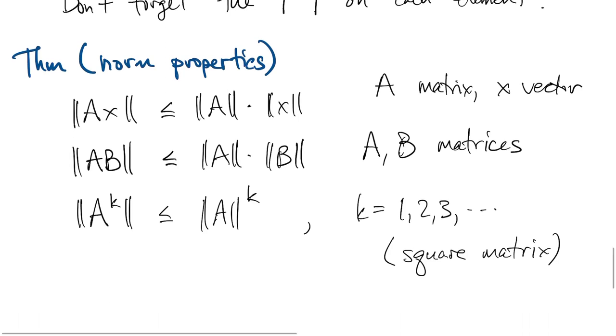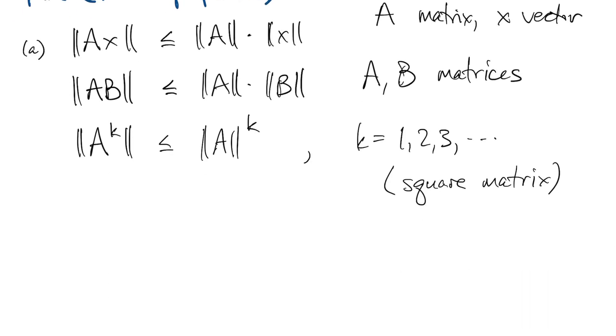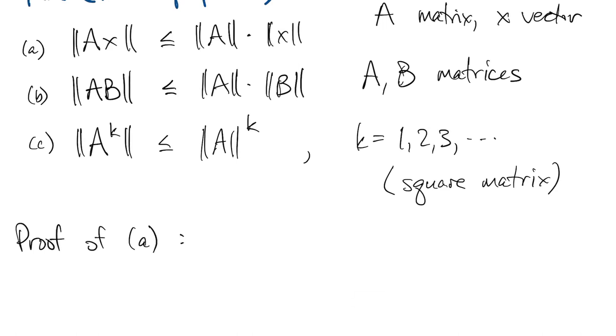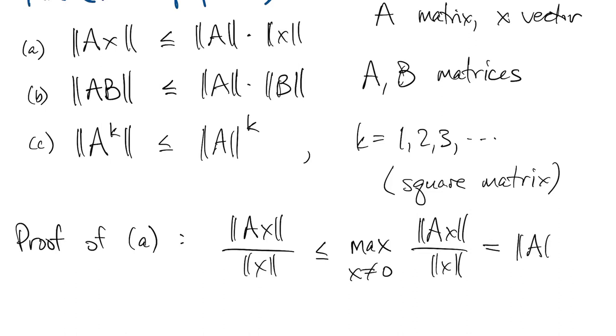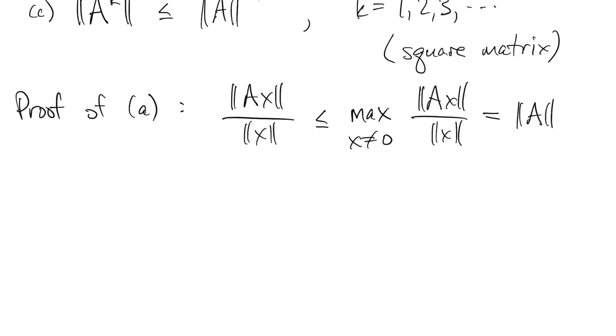So if we call these three facts A, B, and C, how do we prove something like this? Well, the proof of A follows directly from the definition of the induced norm. So if you look at the ratio of those two numbers, norm of Ax and norm x, well that's less than or equal to the maximum of all such ratios over all vectors, but that by definition is the norm of A. And so if you just rearrange the inequality from the beginning to the end, you get the statement in the theorem.